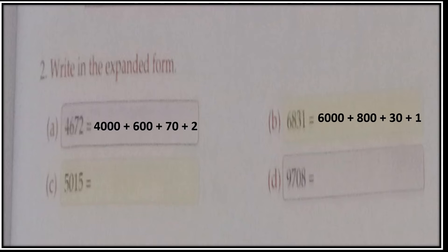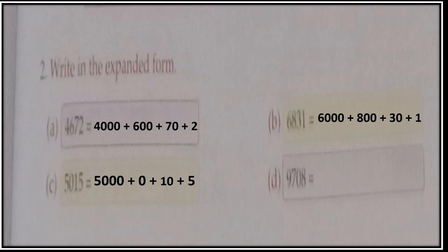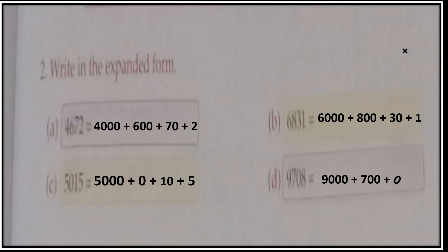Now see Part C — 5, 0, 1, 5. 5 is at the thousands place, 0 is at the hundreds place, 1 is at the tens place, and 5 is at the ones place. So you write: 5,000 + 0 + 10 + 5. Now Part D — 9, 7, 0, 8. 9 has place value 9,000; 7 has place value 700; 0 is at the tens place so you mention 0; and 8 at the ones place has value 8. So you write: 9,000 + 700 + 0 + 8.